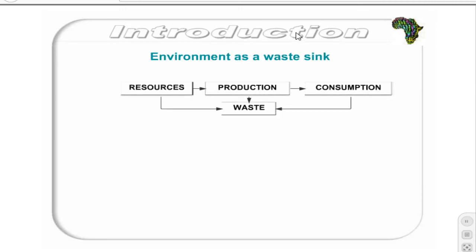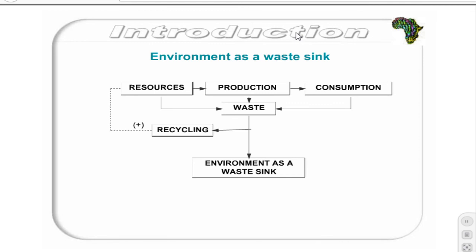The second linkage is the environment as a waste sink. The environment acts as a waste sink in that it receives waste produced within the economy. This waste can be generated during the production process in the form of air pollution, effluent, and landfill waste, or during the consumption process, e.g. the disposal of packaging. The environment also receives waste from the environment itself, e.g. through leaf litter. Some of this waste can be recycled, such as plastics, paper, and glass, providing additional resources for the economy. Waste that is not recycled is received by the environment, denoted as W. The environment has some capacity to assimilate this waste — that is, to render the waste harmless. The assimilative capacity A is, however, limited, and once a threshold is reached where waste exceeds the environment's assimilative capacity, environmental degradation occurs.